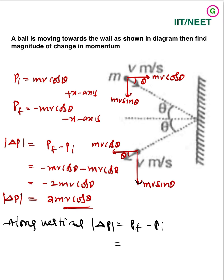P initial also moving downwards, mv sin theta minus mv sin theta. So that means it's coming to 0, that means along the vertical is 0, along the horizontal 2 mv cos theta.